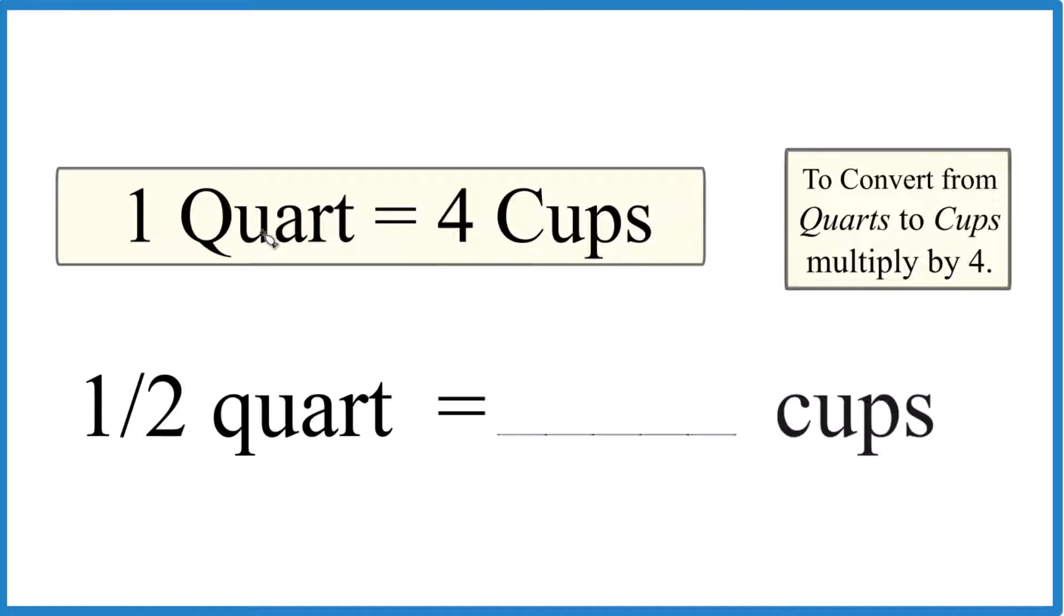So one quart is four cups. So if we have half of a quart, we have half of four. We have two cups. And that is the answer.